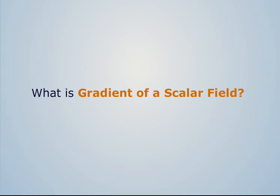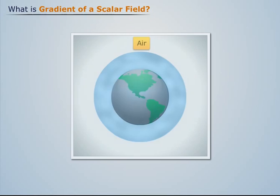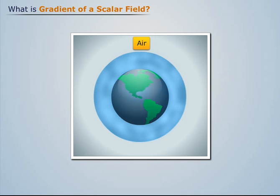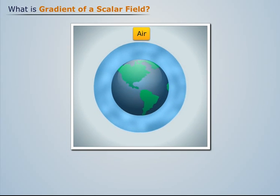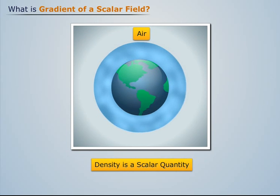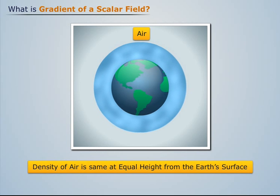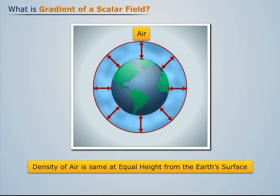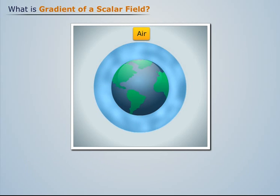What is gradient of a scalar field? Consider air on the Earth's surface. We know that density is a scalar quantity. We also know that density of air is the same at equal height from the Earth's surface.